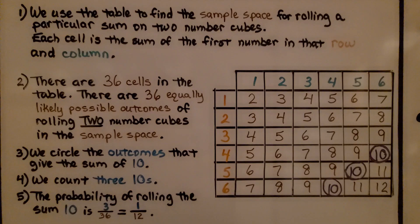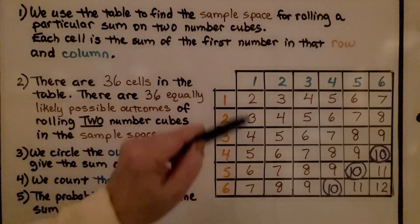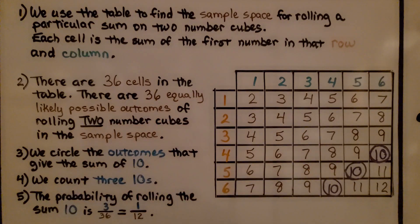There are 36 cells in the table. We have 6 times 6, which is 36 cells in all. There are 36 equally likely possible outcomes of rolling two number cubes in the sample space.